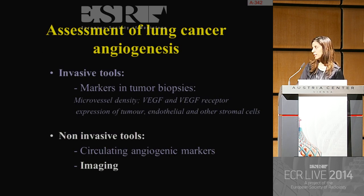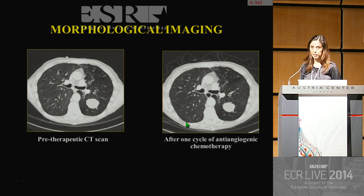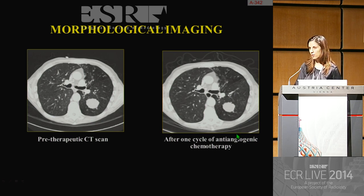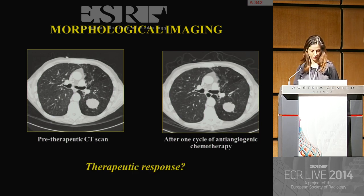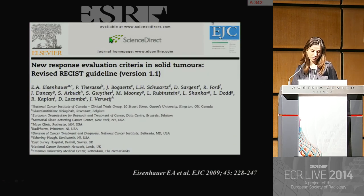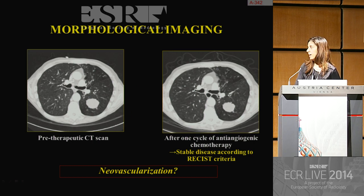But there are also non-invasive imaging tools. Regarding morphological imaging, here is an example of an adenocarcinoma treated by anti-angiogenic chemotherapy. You have the baseline and the CT scan after one cycle of chemotherapy with Bevacizumab, which shows the therapeutic response. If we use the traditional morphological criteria, in particular RECIST criteria version 1.1, we should say that there is stable disease. But how can we appreciate the changes in neovascularization?